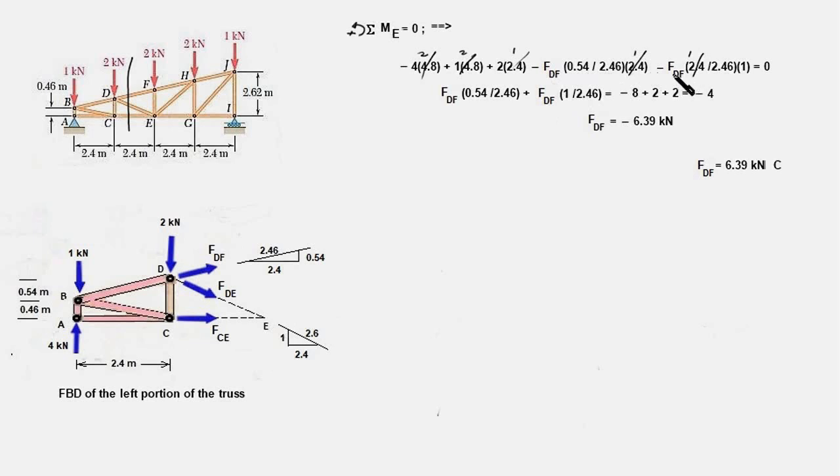This is the x component of FDF and the moment arm for this force component would be DC which is 1 meter. So simplifying this equation will give us FDF equal to minus 6.39 kN. What is the meaning of minus sign here? It means that our earlier assumption that all the forces in the members are tensile is incorrect, and in reality the force FDF in the member DF is compressive. Therefore we can write FDF equal to 6.39 kN and C denoting it's a compressive force.